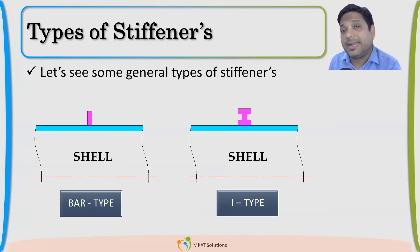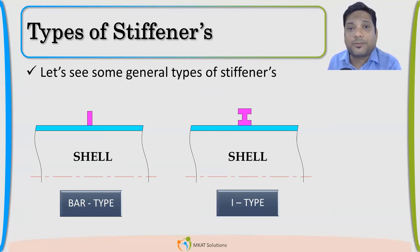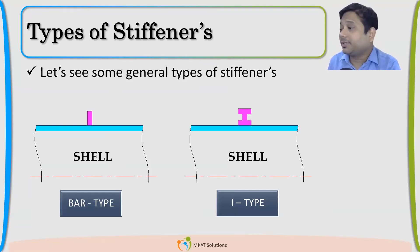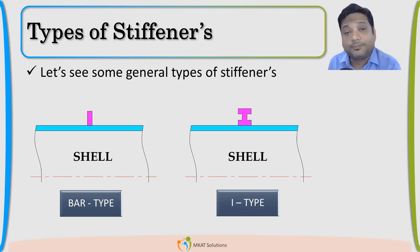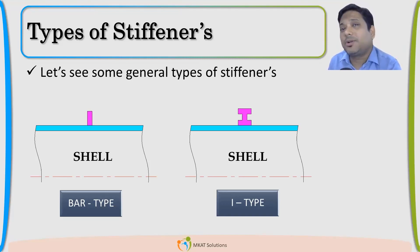The next question is: will any stiffener work as a line of support? Can we call just any ring a stiffener? There should be a checklist — not every stiffener will qualify. We cannot call all rings stiffeners. It needs to meet certain criteria to be qualified as a stiffener and to act as a line of support. It should have adequate strength.